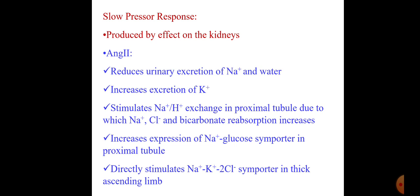The slow pressure response occurs at the level of the kidney. Angiotensin 2 reduces urinary excretion of sodium and water, and increases excretion of potassium. It stimulates the sodium-hydrogen exchanger in the proximal tubule, increasing sodium chloride and bicarbonate reabsorption. It also increases expression of the sodium-glucose transporter in the proximal tubule and directly stimulates the sodium-potassium-2-chloride transporter in the thick ascending limb — the same transporter blocked by loop diuretics like furosemide.